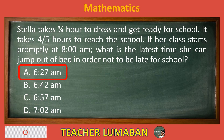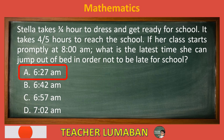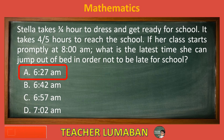Stella takes 3/4 hour to dress and get ready for school. It takes 4/5 hours to reach the school. If her class starts promptly at 8 a.m., the latest time she can jump out of bed in order not to be late for school is 6:27 a.m.